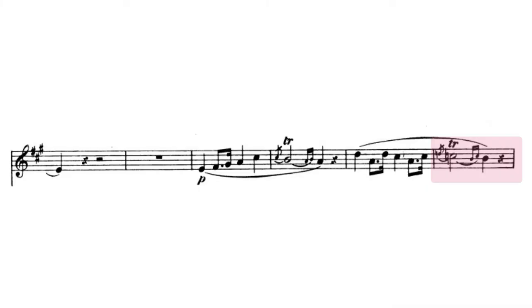And then the next place is bar 21. If you see D natural and followed by C natural, tricky because one bar before is A major key. And then after that, it becomes three flats. You have to be careful with the intonation here.